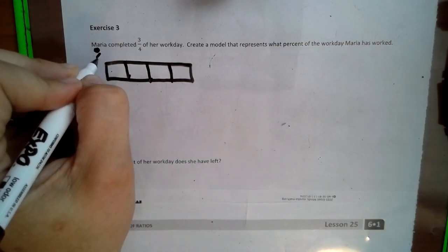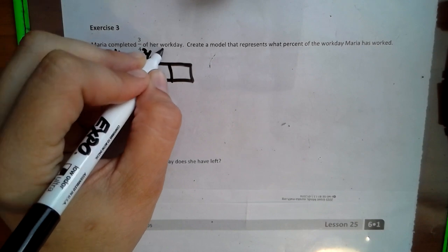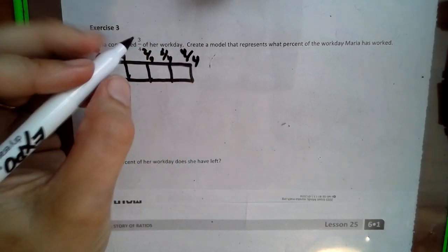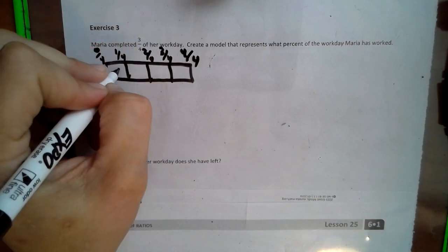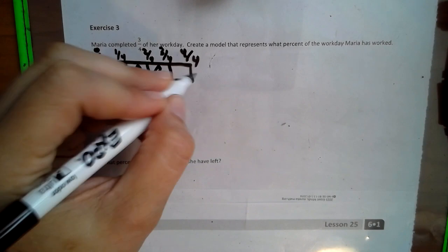So we have zero-fourths, one-fourth, two-fourths, three-fourths, four-fourths, meaning the whole thing. So she completed three-fourths of this picture.